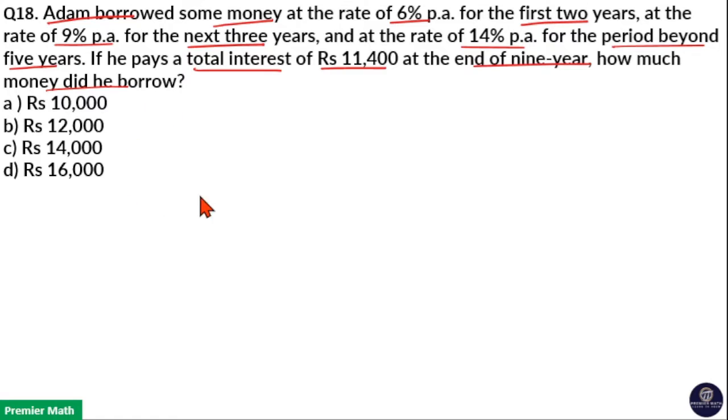Here, we have to find principle. So for the first 2 years, he has to pay 6% per annum. So total interest he paid for the first 2 years is 6% into 2, which is 12%.